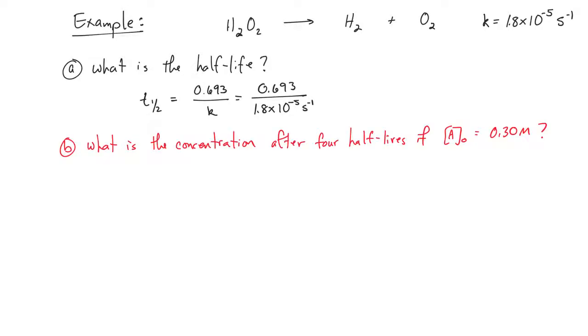We can also use this equation to determine the concentration after one or more half-lives have passed. It's possible to solve this one where it says what concentration will remain after four half-lives have passed if the initial concentration is 0.30 molar. It's possible to solve this by just taking the 0.30 molar and dividing by two. That would be after one half-life. And getting an answer, it's going to be 0.15.